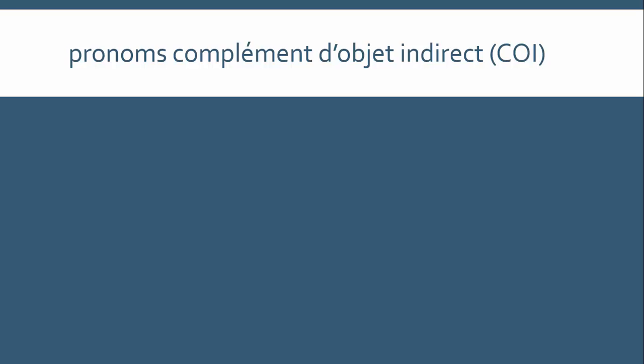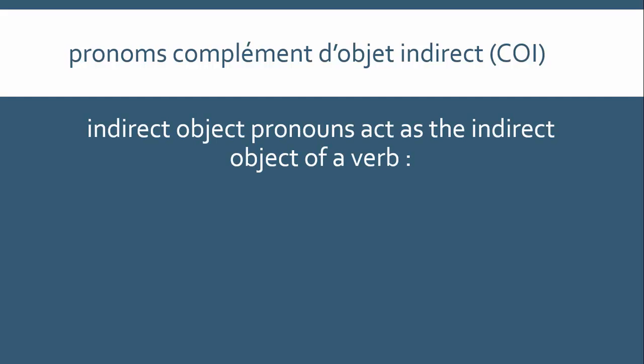As I said in the direct objects video, this is a useful piece of terminology, particularly if you read your grammar in French, because you will see it an awful lot. Not surprisingly, indirect object pronouns replace the indirect object of a verb, the indirect object being the person or thing which is indirectly affected by the action.